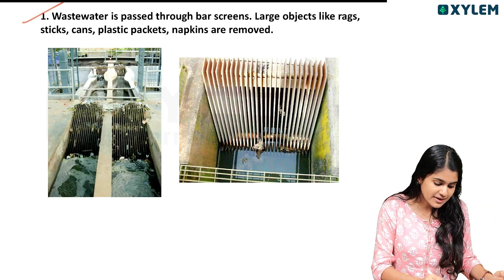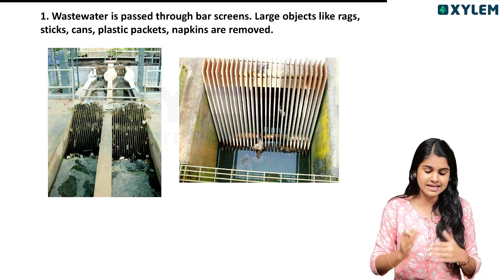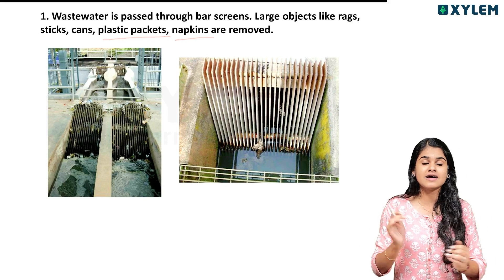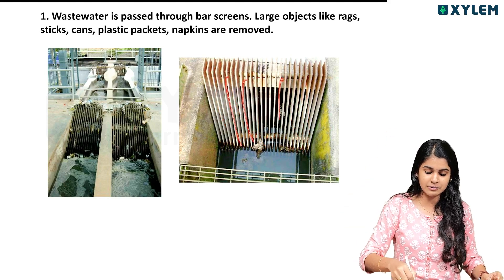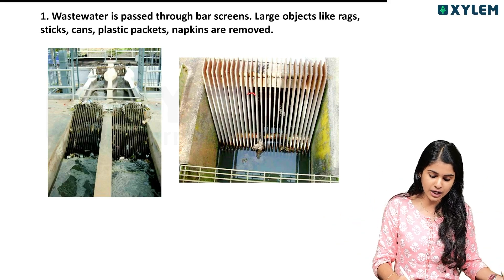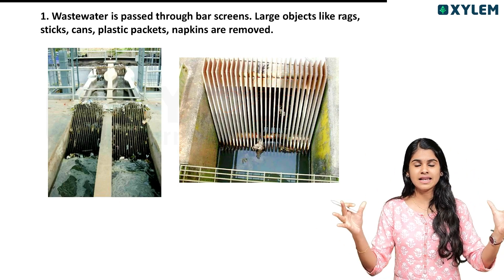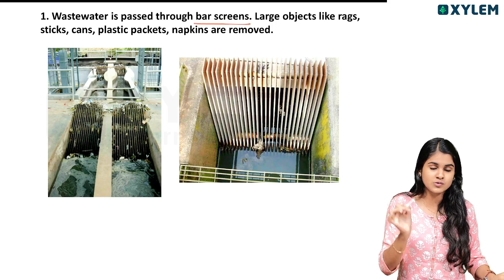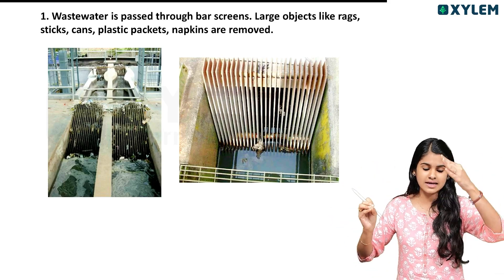First step: waste water is passed through a bar screen. Large objects like rocks, sticks, cans, plastic packets, and napkins are removed in this first step using the bar screen. When we use water, the bar screen filters out many bags and plastic items, and that is why we use it to remove them.